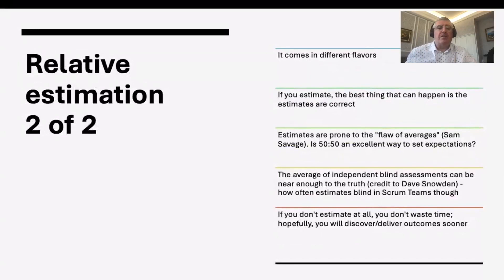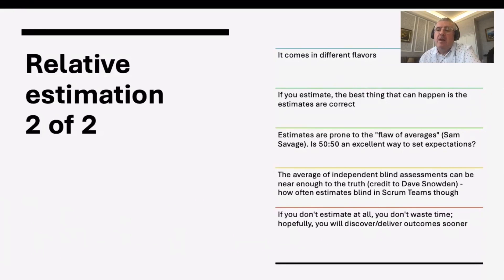Relative estimation comes in a variety of flavors. If you estimate, the best thing that can happen is they're correct. They're prone to the flaw of averages — did you know that 50% of people perform below average? The average of independent blind assessments, as maintained by Dave Snowden, can actually be quite good. But I often find we don't have blind estimates in Scrum teams. And 99.9% of the time, estimates are wrong. They make us feel better, but are there better ways?